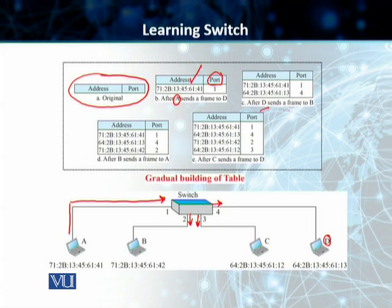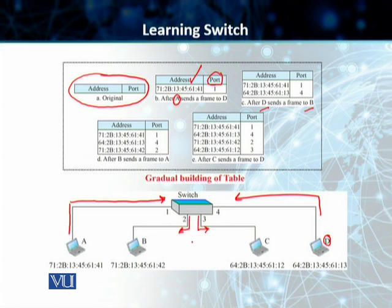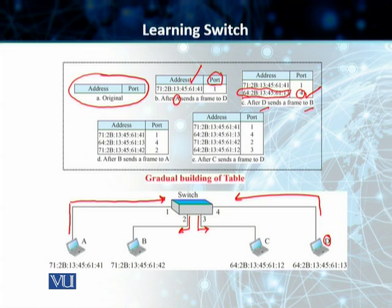Now let's suppose station D sends a frame to B. Because the switch only knows about A as per its switching table, it will again send out a broadcast through ports 2 and 3. Port 1 stays clean because the switch now knows that port 1 belongs to station A. At the same time, the switch makes another entry into its switching table — the entry of station D — adding station D's link layer address and the corresponding port.